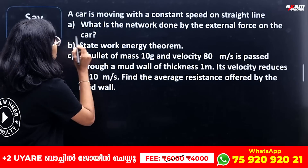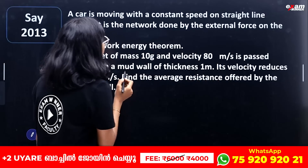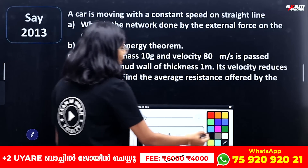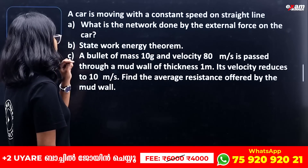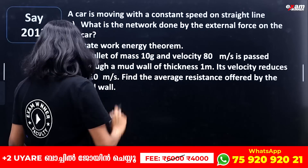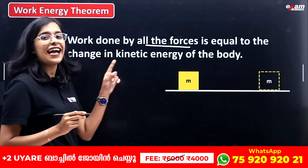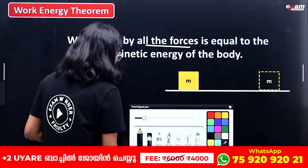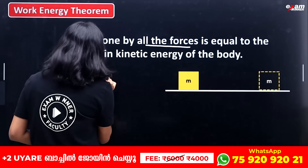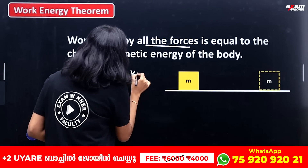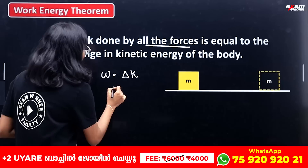First question: a car is moving with a constant speed on a straight line. What is the net work done by the external force on the car? To answer this, we use the work-energy theorem. Work done by all forces is equal to the change in kinetic energy of the body — that is, W equals delta K.